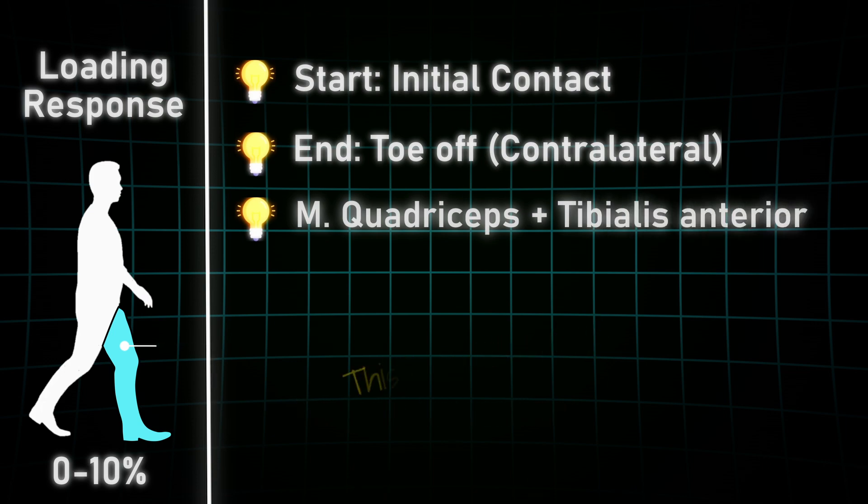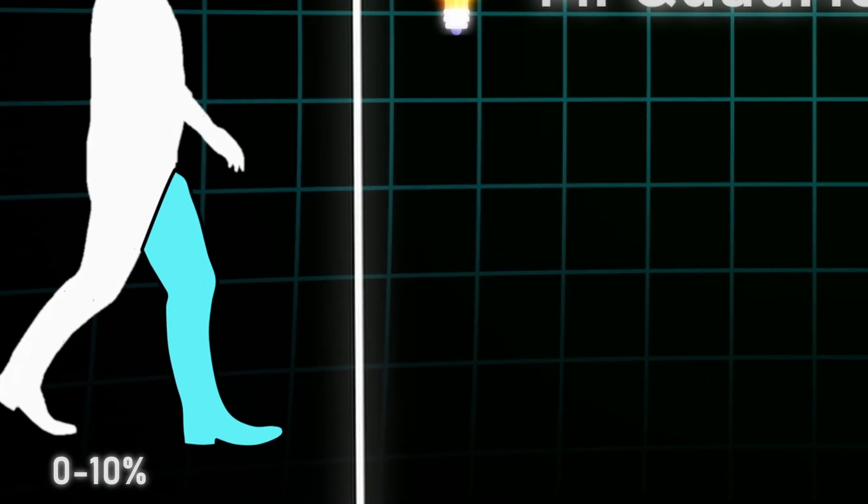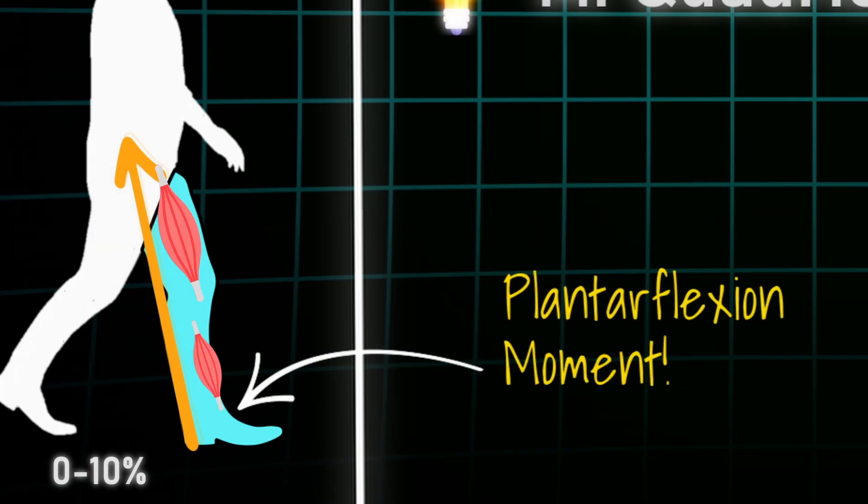This increases the load on the leg and key muscles have to start working. The quadriceps and the tibialis anterior are active in an eccentric manner. The knee flexes approximately 15 to 20 degrees to help absorb the impact during weight transfer. Due to the increased knee flexion moment on the quadriceps muscle, it is required to really put in some work. The same is true for the tibialis anterior.